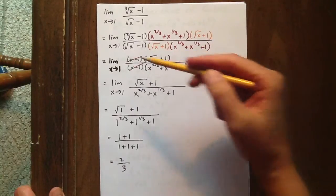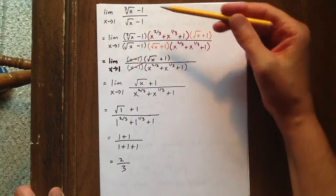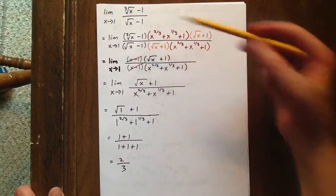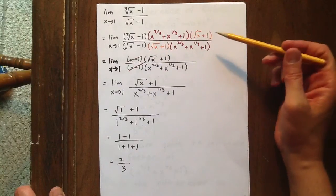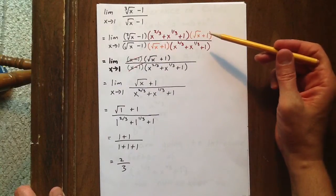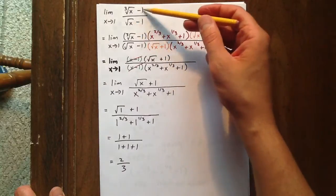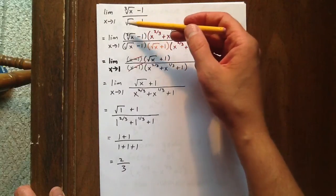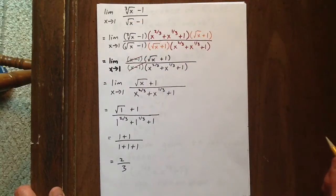In this question, we're going to take the limit as x goes to 1 of the expression shown. This is going to involve two different types of rationalizing: we want to rationalize a difference of cubes, and we want to rationalize a difference of squares.